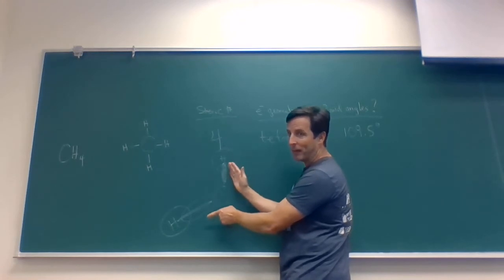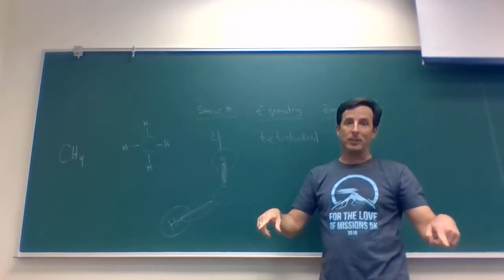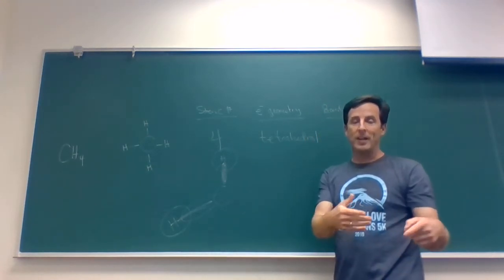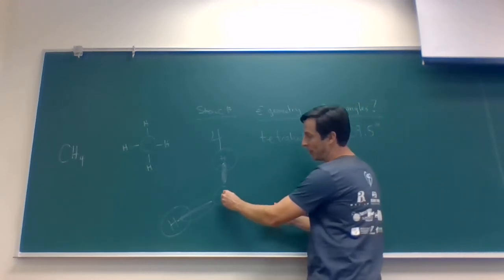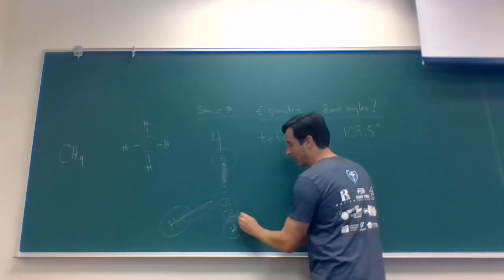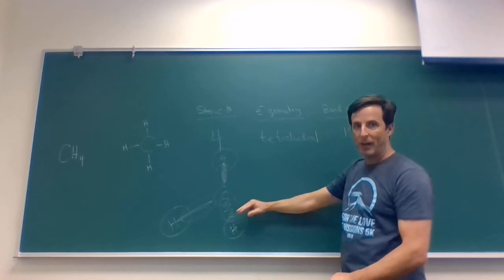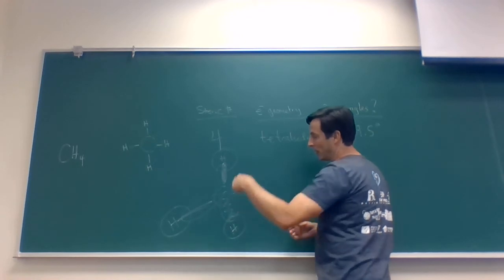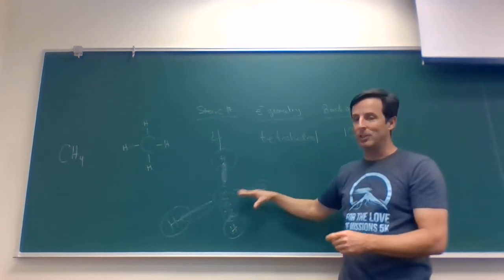All four bonds in CH4 are sigma bonds — direct overlaps between the atoms. The angle between any two bonds is about 109.5 degrees. Since a tetrahedron is three-dimensional, the bonds can't all be drawn flat. One orbital comes out toward you, another goes back behind the board — giving us a tetrahedral three-dimensional molecule formed by the overlap of orbitals.